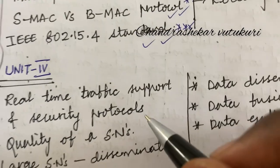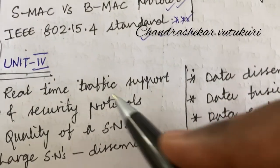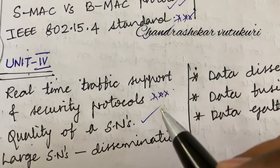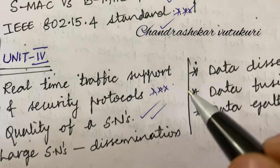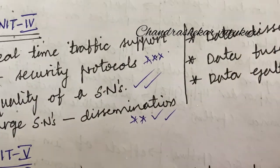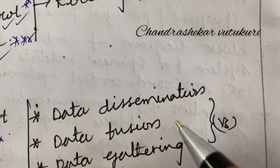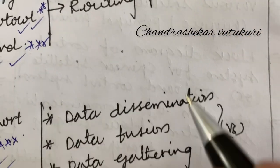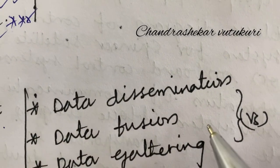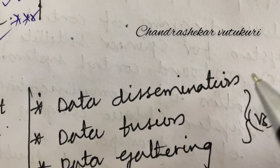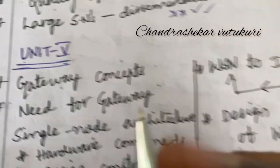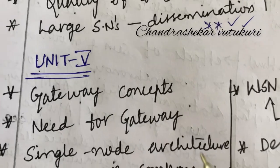Unit 4 is slightly longer in structure compared to the first three units. Real-time traffic support and security protocols along with diagrams, and quality of sensor networks is a short question. Large sensor networks along with data dissemination is a top question. Other terms such as data dissemination versus data fusion versus data gathering may be asked individually or as a two- to three-mark combination.